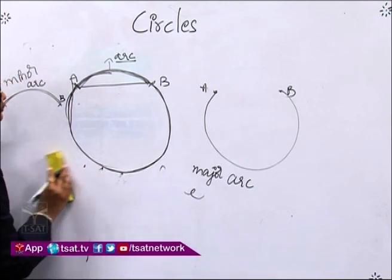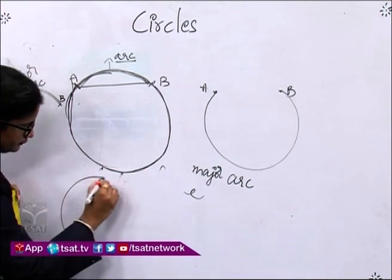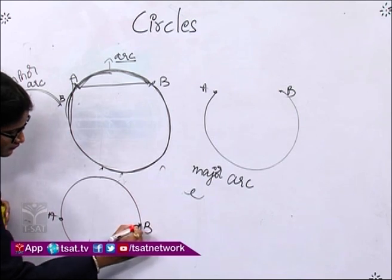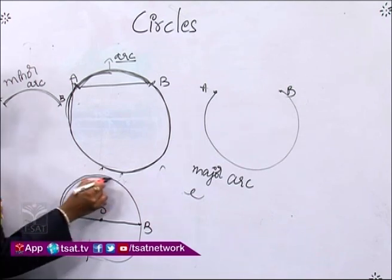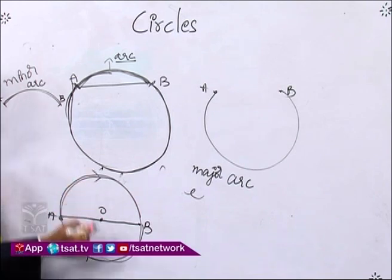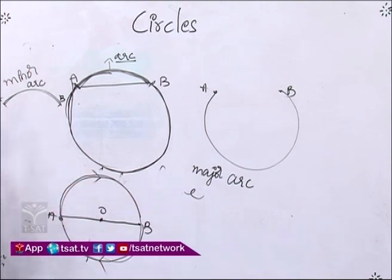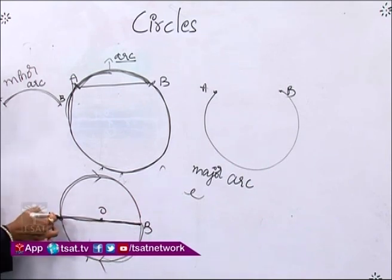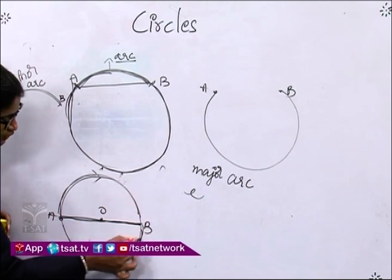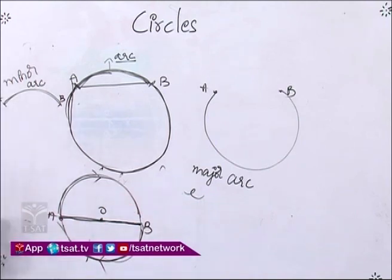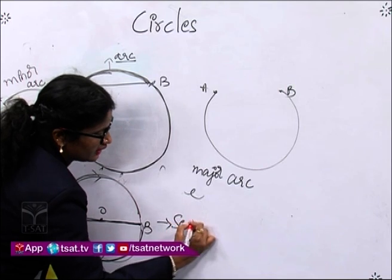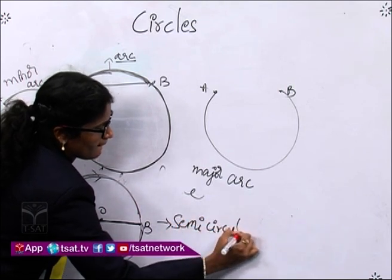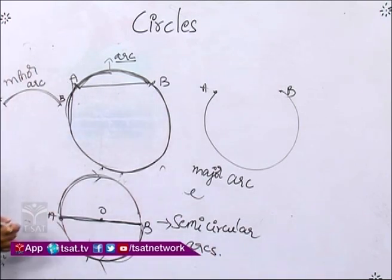Let us see what happens if AB is a diameter of the circle. It passes through the centre, so both arcs formed are the same in length — the length of this arc and this arc will be the same. Now we cannot name them minor and major, so we name them semicircular arcs, because they are formed by the semicircle.